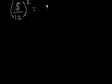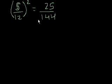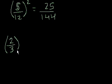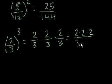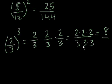Let's do a couple more. 5 over 12 squared equals 25 over 144 — 5 times 5 is 25, 12 times 12 is 144. And 2 thirds to the third power — that's 2 thirds times 2 thirds times 2 thirds, using the dot as another way to write multiplication. That equals 2 times 2 times 2 over 3 times 3 times 3. The numerator, 2 times 2 times 2, equals 8. The denominator, 3 times 3 times 3, equals 27. So 2 thirds to the third power equals 8 over 27.